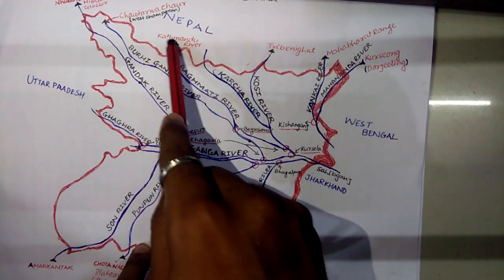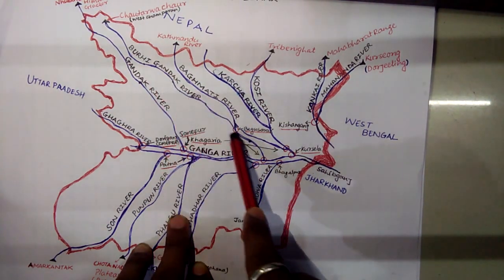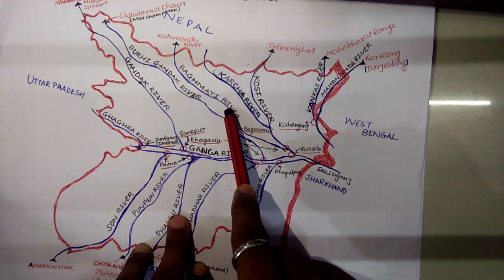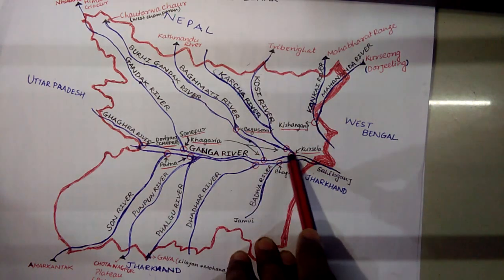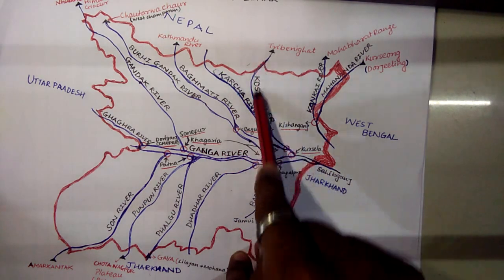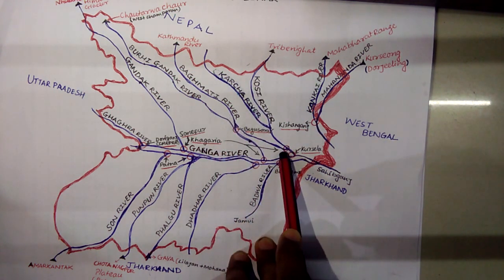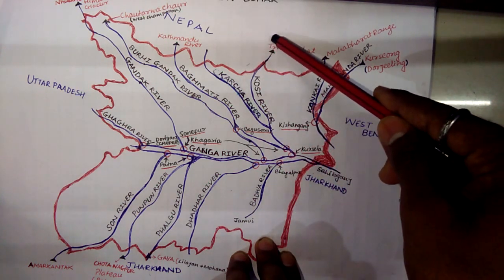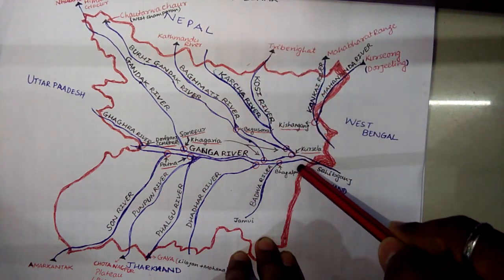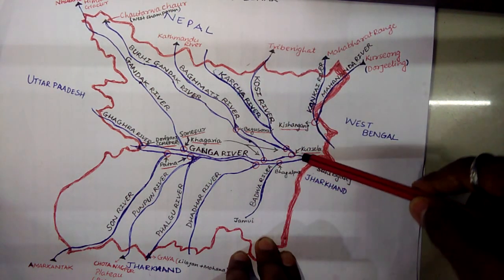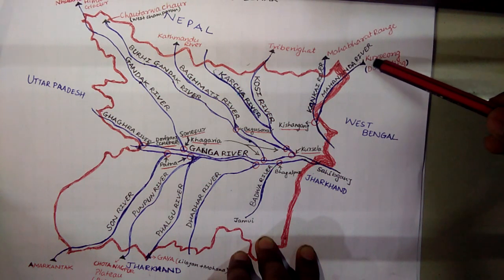The Bhagmati merges into the Budhi Ganga at Begusarai, and on one side it flows into the Kosi river system — so Bhagmati is a tributary of the Kosi river. This confluence is in Khagadiya district. The Kosi river comes from Triveni Ghat in Nepal and merges into the Ganga at Kursela.